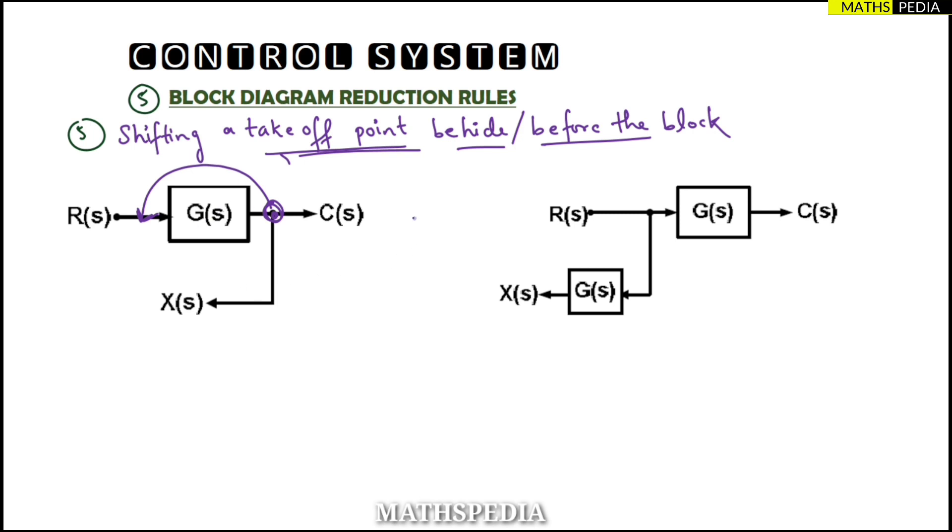So for that case, what we can do? Simply the rule is shown over here. When we shifted this point from here to here, simply in that signal we added a block which is having the same transfer function as this one. We didn't do the reciprocal.